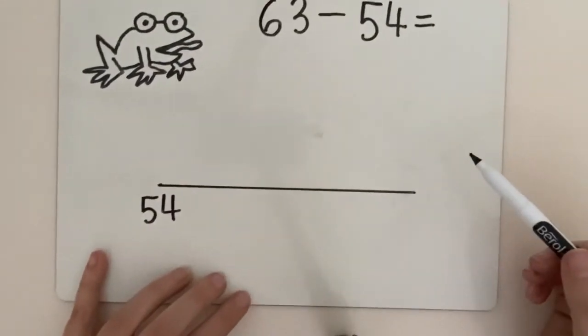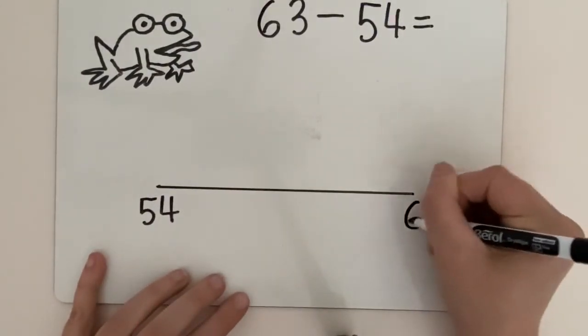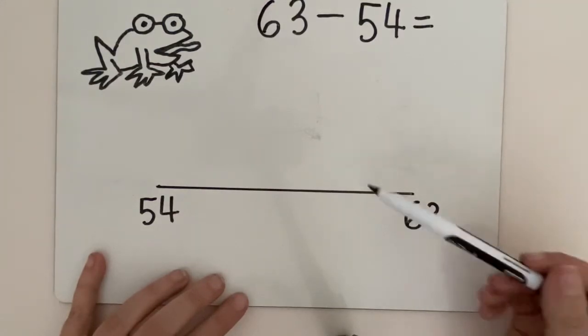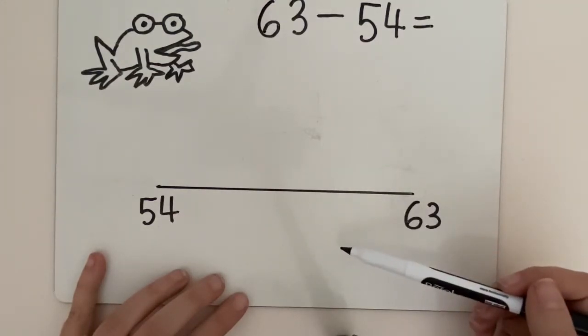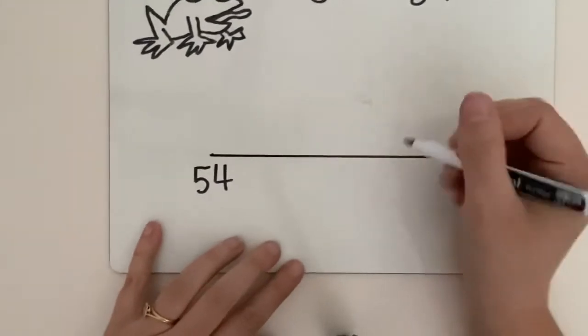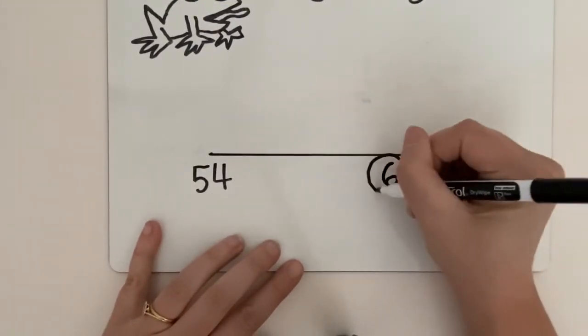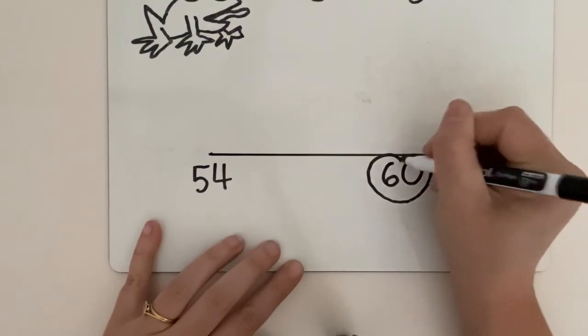We're going to put 63 at the other end. And what is that big fat round tens lily pad that we need to aim for? Yep, you're right, it's number 60. I'm going to put that here. I'm going to draw my lily pad around it just to remind me.